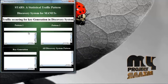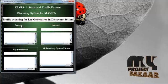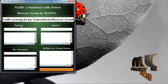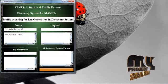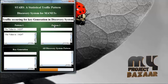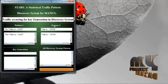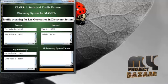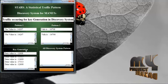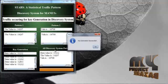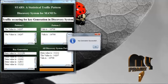Key generation from the split file size value. Select your pattern1 option. It takes some time — traffic occurring. Then select your pattern2 option, which is similar to pattern1. Reduce the traffic in this key generation. Key generation for this value. All discovery system patterns show all three values.